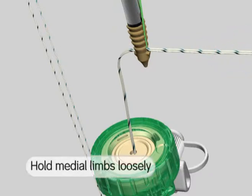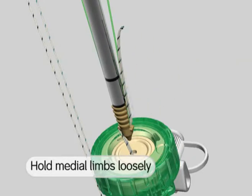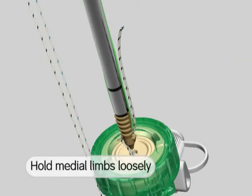While keeping some slack in the free medial suture limbs, advance the anchor into the joint towards the prepared hole.